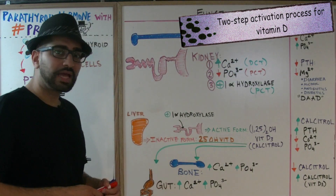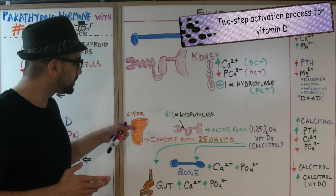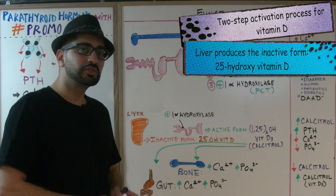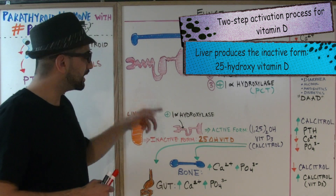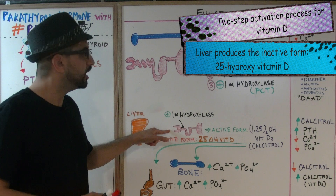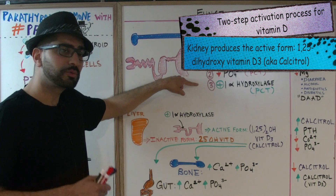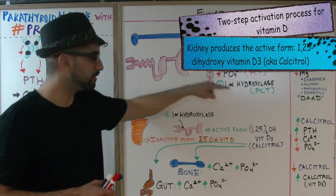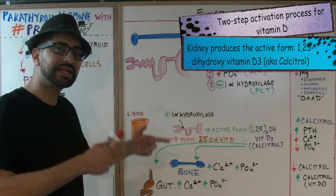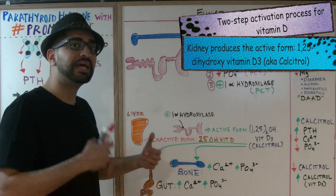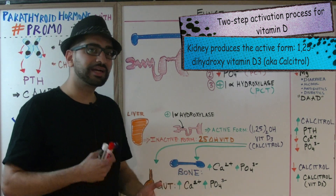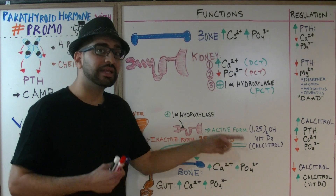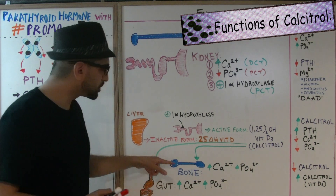Vitamin D starts as an inactive form produced in the liver — 25-hydroxy vitamin D — which needs to be converted to an active form. It's a two-step activation process: first the liver, then the kidney. Parathyroid hormone stimulates one-alpha hydroxylase in the proximal convoluted tubule of the kidney, converting the inactive form to the active form — 1,25-dihydroxy vitamin D, also referred to as calcitriol.